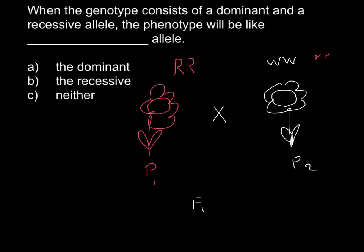What are we going to get? One of the parents is going to give one of these alleles, and the second plant one of these alleles. It doesn't matter which one because they are of the same kind. So we will have here capital R and W. This would be the genotype of the new plant, and phenotypically it would be just the same as parent 1.